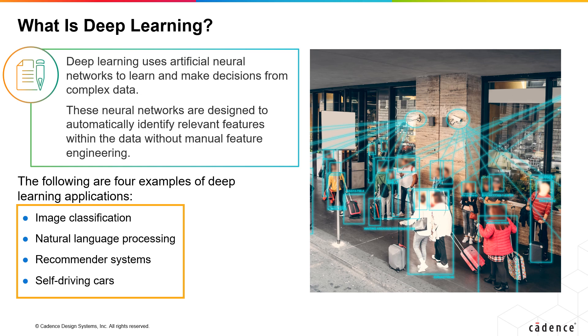Deep learning is a critical component of self-driving car technology, where it is used to recognize objects, predict their behavior, and plan safe driving maneuvers.